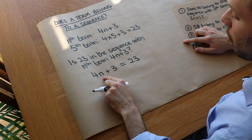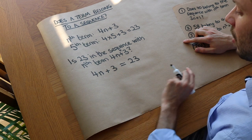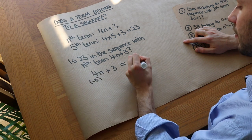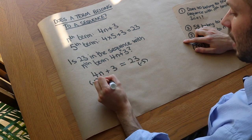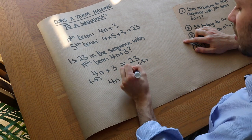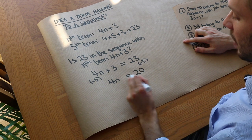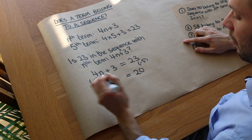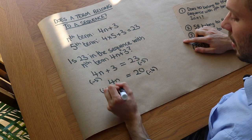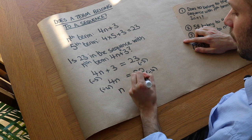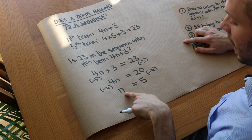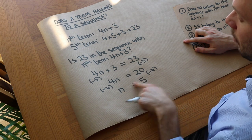We want to establish what n is. So we set 4n plus 3 equal to 23, then subtract 3 from both sides. That gives us 4n on the left, and 23 minus 3 is 20 on the right. Then we divide both sides by 4, and we get n equals 5. So 23 is in this sequence — it's the fifth term.